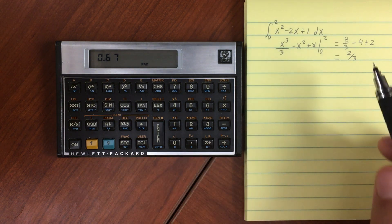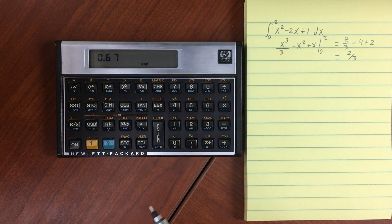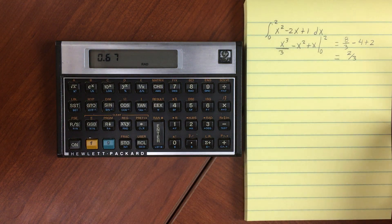So I had two thirds calculated by hand and the calculator is giving me 0.67. So we did execute that correctly.